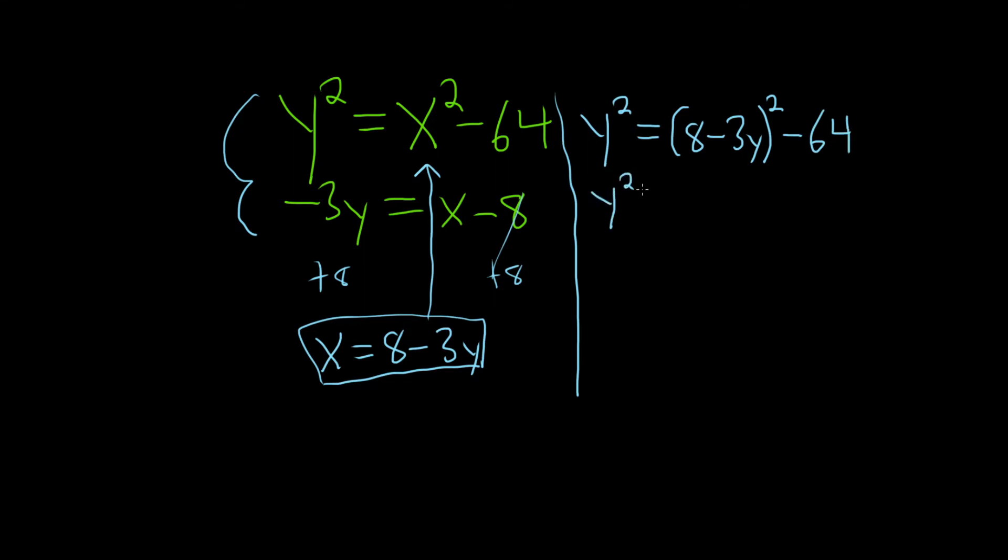So we have y squared equals, so let's go ahead and multiply this out. Let's just write it twice. 8 minus 3y times 8 minus 3y. And then minus 64. All right, let's go ahead and multiply it out.